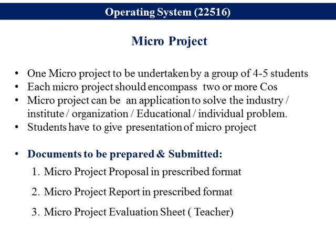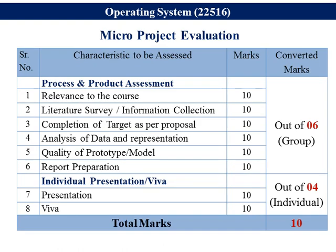For the micro project, you have to first submit a proposal by grouping three students only. Then you have to submit a report if the proposal is passed or approved. And then an evaluation sheet to get the marks, as you have already done in previous semesters — for this semester also you have to do the same thing. The micro project evaluation criteria is: 6 marks are given to the process and product, and 4 marks are given to the individual presentation or viva. So for the micro project there are 10 marks.